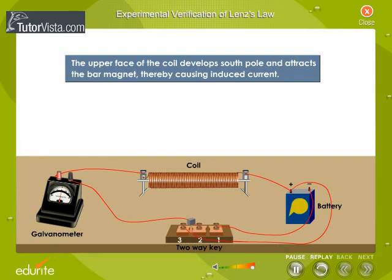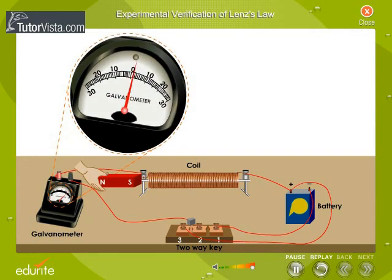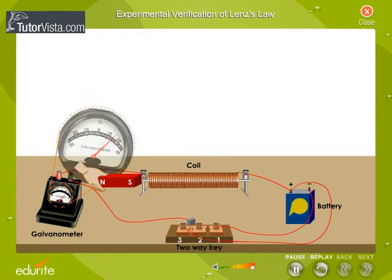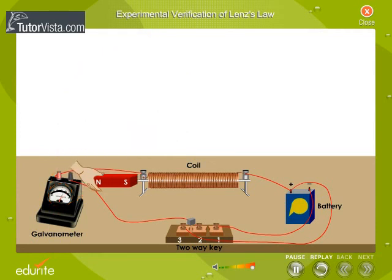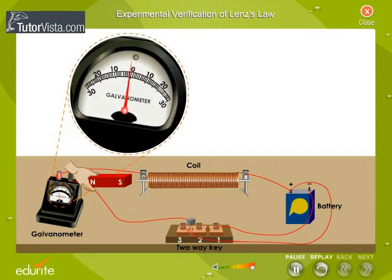Now observe the direction of deflection of the galvanometer needle when the south pole of the bar magnet is moved instead of the north pole. Since exactly similar results are obtained, we can conclude that the induced current always opposes the change that produces it.